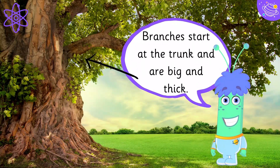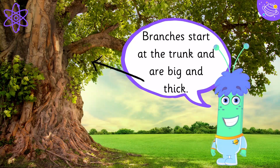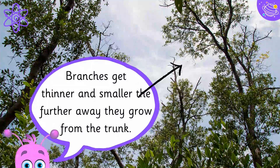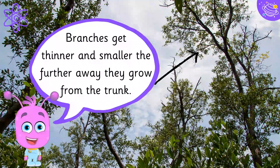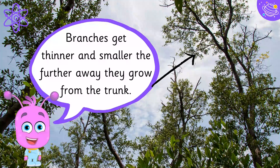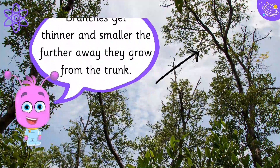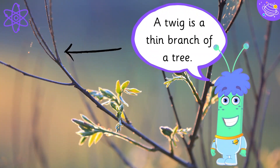Branches start at the trunk and are big and thick. Branches get thinner and smaller the further away they grow from the trunk. A twig is a thin branch of a tree.